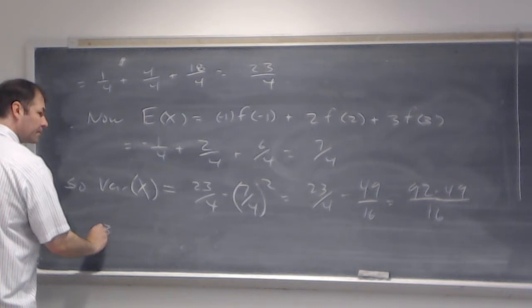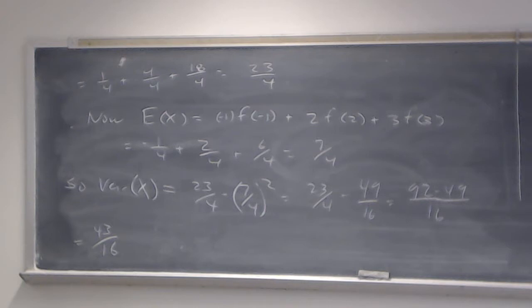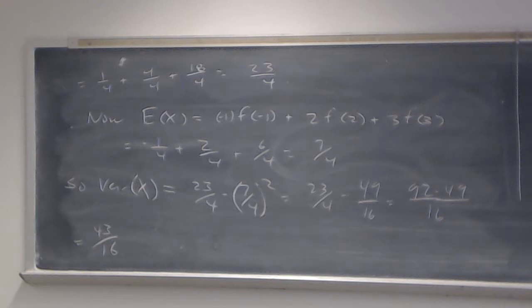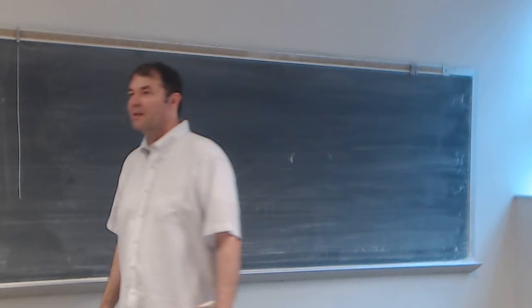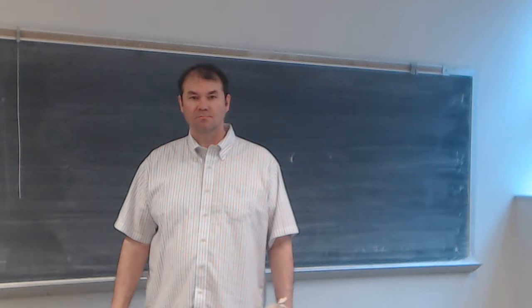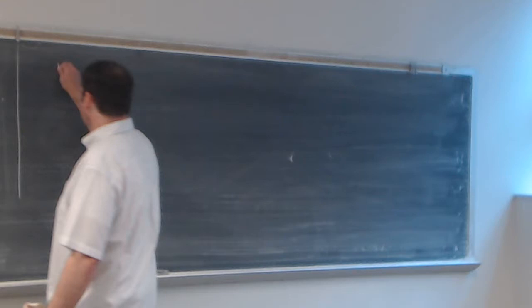And that's how we show an example of computing the variance for a discrete random variable. For the remainder of this video lecture, I want to look at some specific classified discrete random variables. We're going to start off with the most simplest.